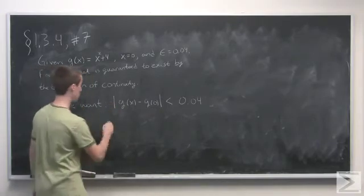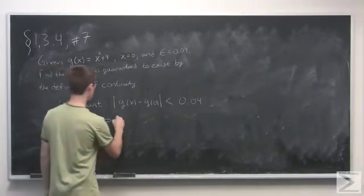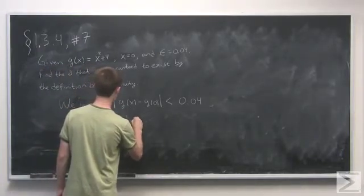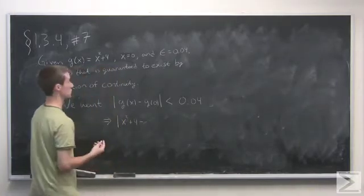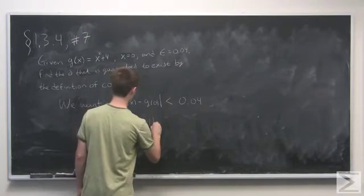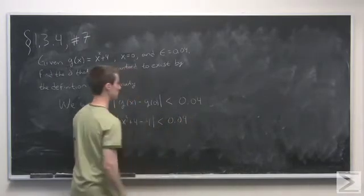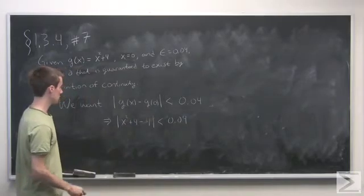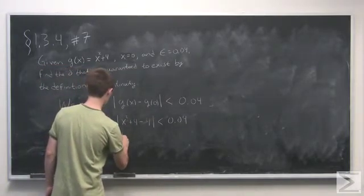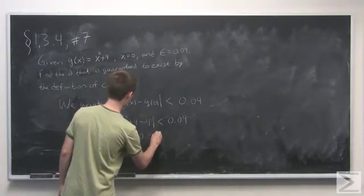So if this is true, that is going to mean that x squared plus 4 minus g of 0, which is just 4, has to be less than 0.04. So this is the same thing as saying absolute value of x squared is less than 0.04.